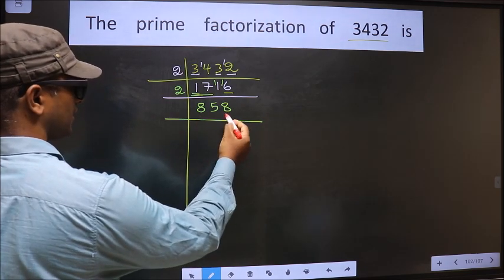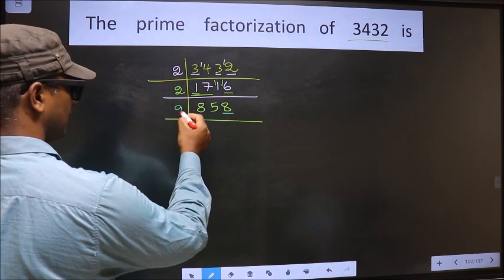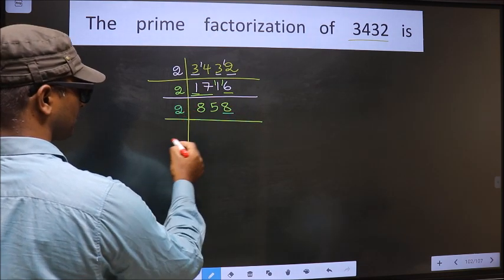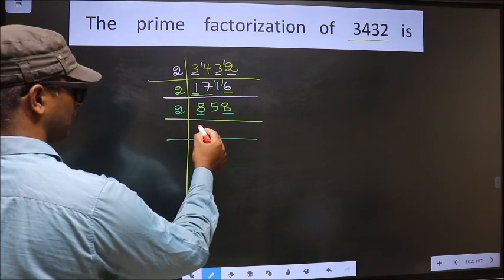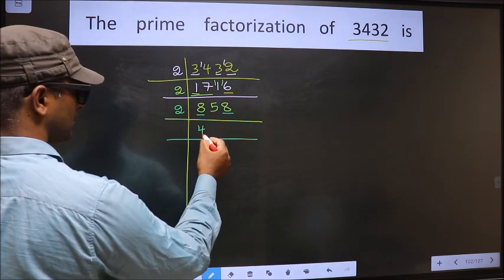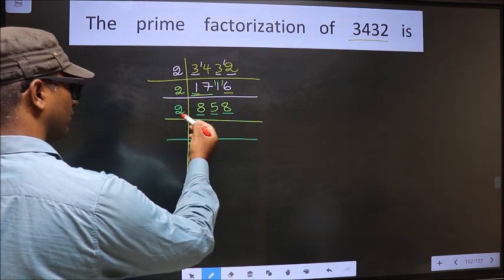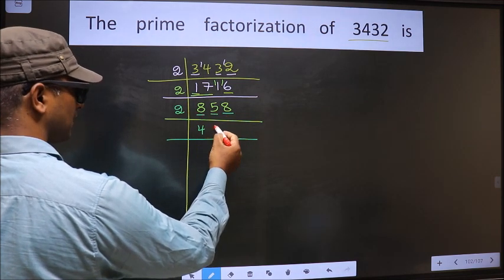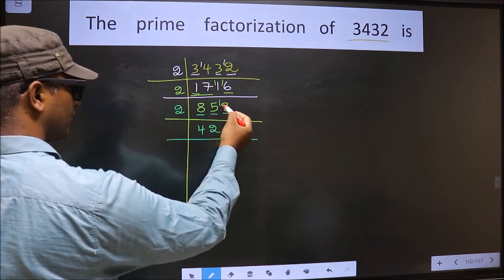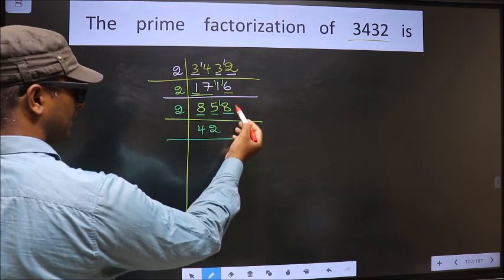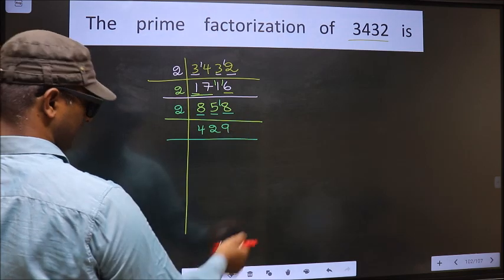For this number, the last digit is 8, so we take 2 here. The first number is 8. When do we get 8 in the 2 table? 2 fours, 8. The next number is 5. A number close to 5 in the 2 table is 2 twos, 4. 5 minus 4 is 1, carried forward making it 18. When do we get 18 in the 2 table? 2 nines, 18.